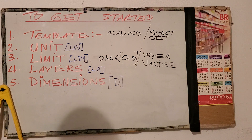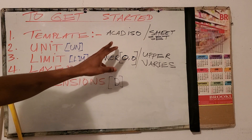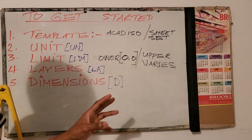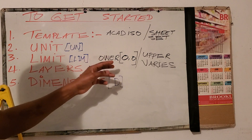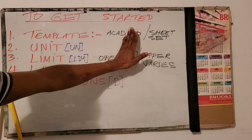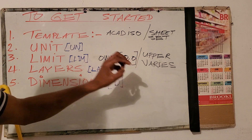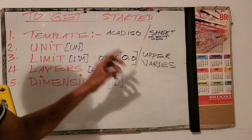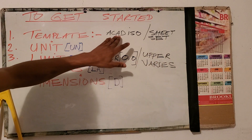Now let's explain these. Templates: ACAD ISO is normally used — the standard unit is millimeters — and this is normally used for building drawing, plain and solid geometry, or mechanical drawing. We typically use ACAD straight, or ACAD. We could also use sheet sets. Under sheet sets we have sheet set for architecture, sheet set for manufacturing, and a couple of other choices.